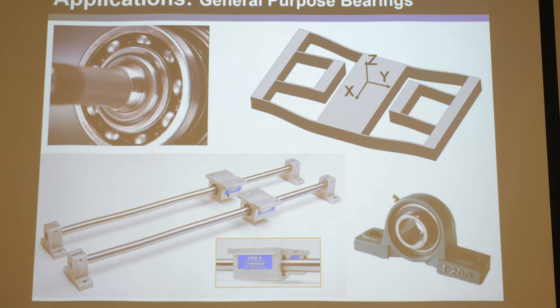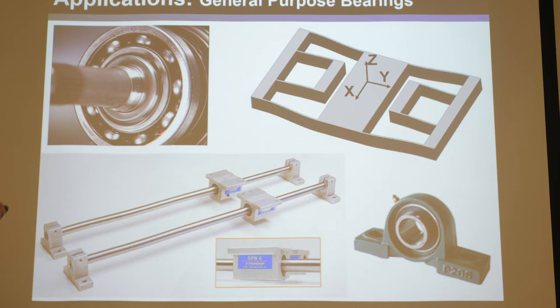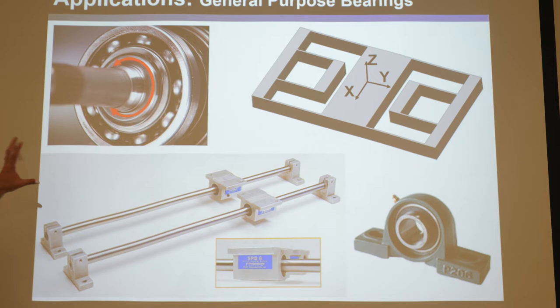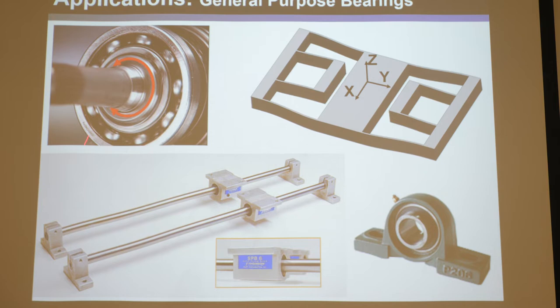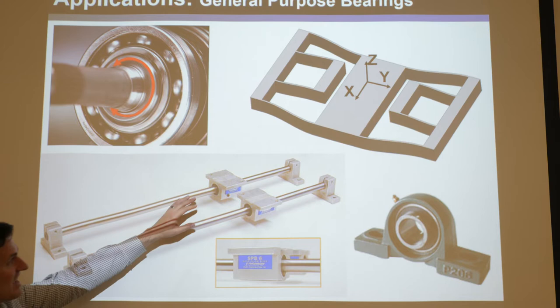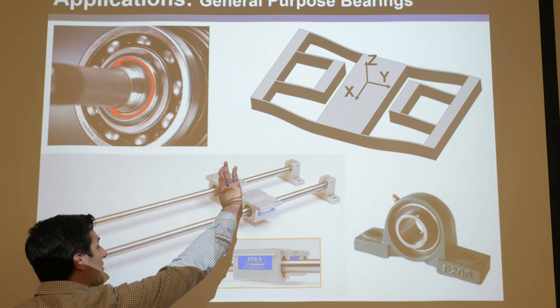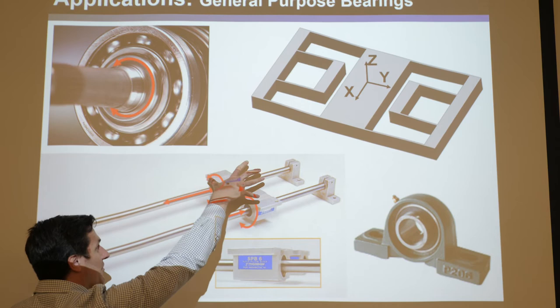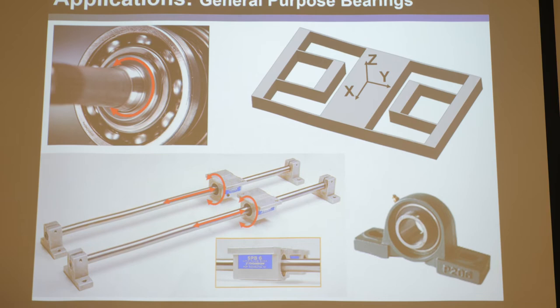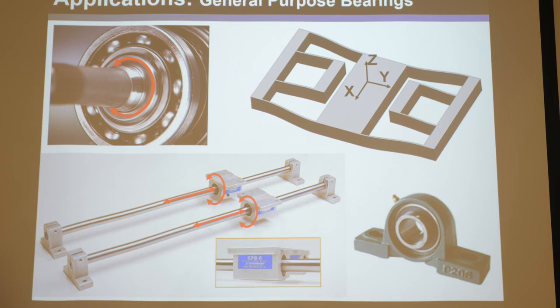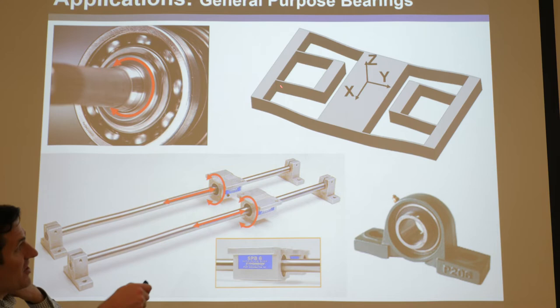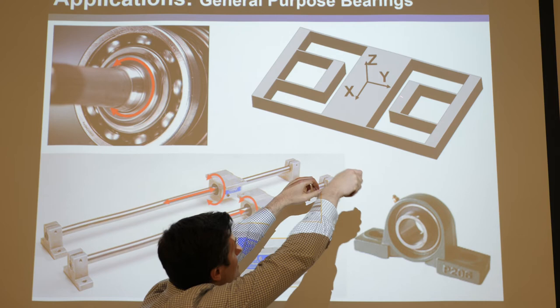A bearing is something that constrains a body to not move in certain unwanted directions while allowing it to move in wanted directions. A ball bearing allows a shaft to rotate freely with almost no resistance while constraining all other directions. A slider and rotating bearing is stiff in all directions but can freely translate and rotate. If you put two of those in parallel to guide a block, you kill the rotation and it can only translate. In the same way, flexures function as bearings.